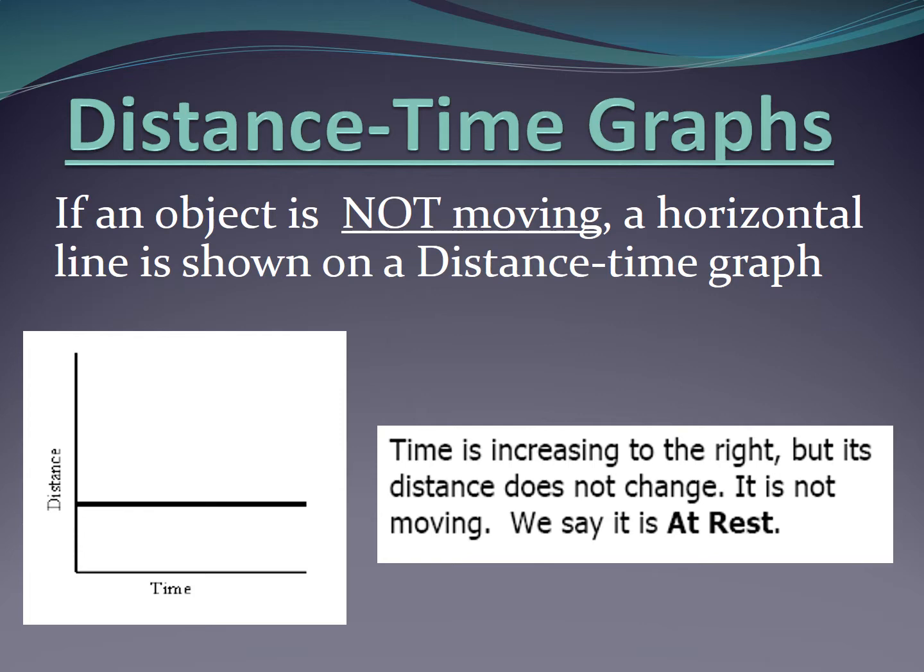If an object is not moving, we're going to see that shown as a horizontal line. That makes sense. Let's say we start at zero and go to 10 seconds, and zero to 10 meters. Well, in 10 seconds, if I maintain four meters the entire time, that means I'm not moving. When we're looking at these graphs, we need to be able to interpret what is happening, not just memorize that a horizontal line is not moving. We say this object is at rest.